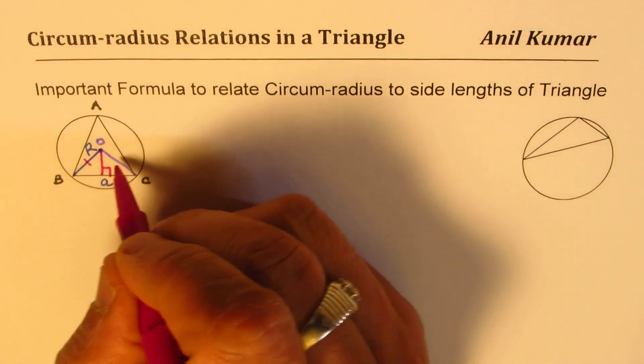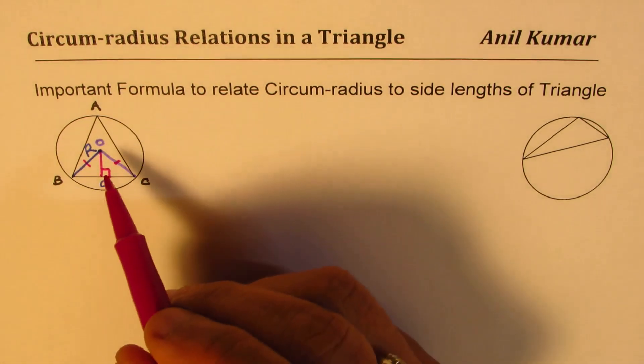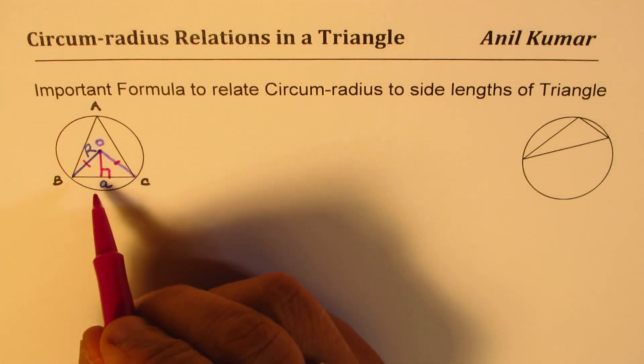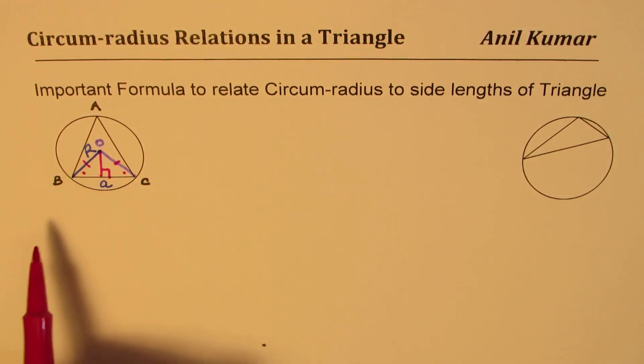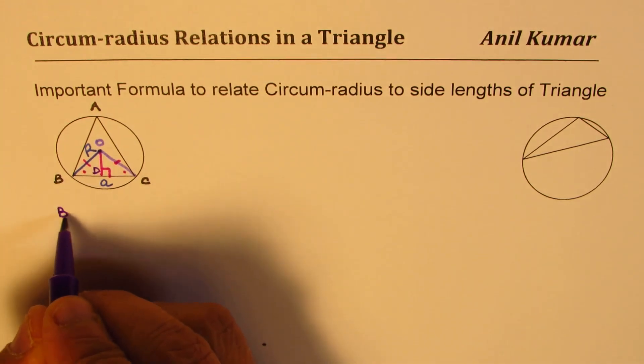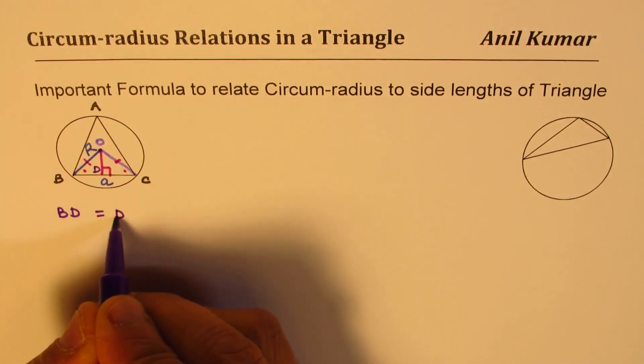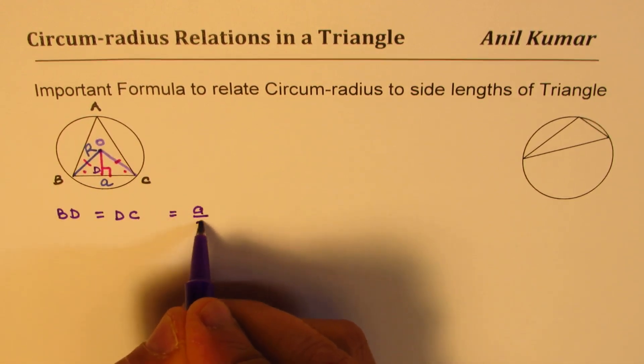Since these are the two radii of a circle, they are the same. Therefore we'll have the same angles also here, and we have 90 degrees. These are the common side, so these are actually congruent triangles. In that case, the length here, let's call this point D. We know BD will be equal to DC, and both will be equal to half of a.